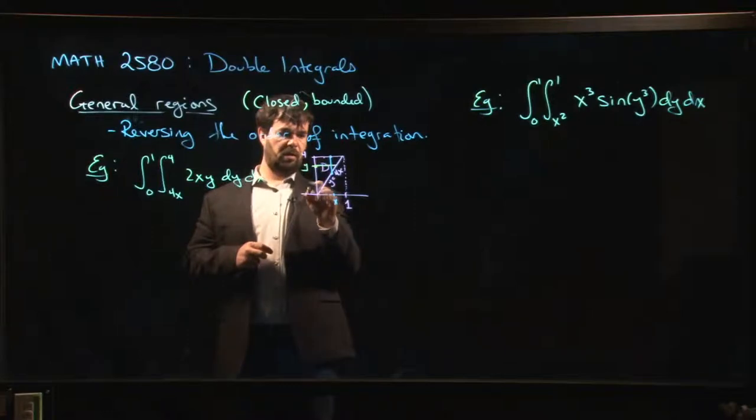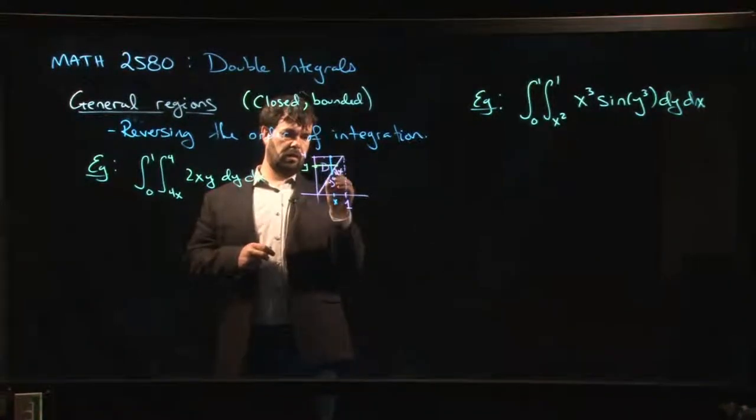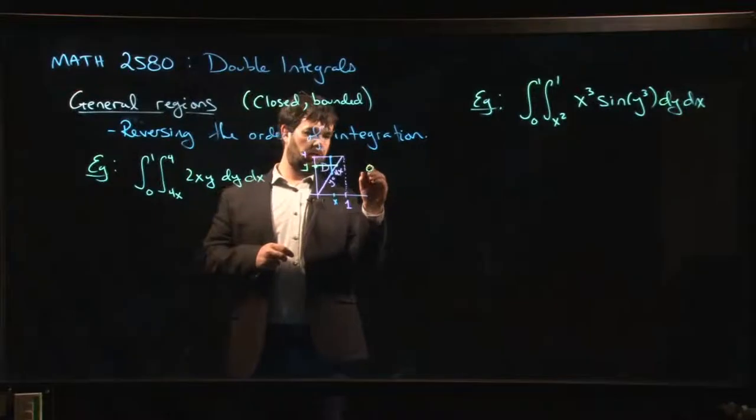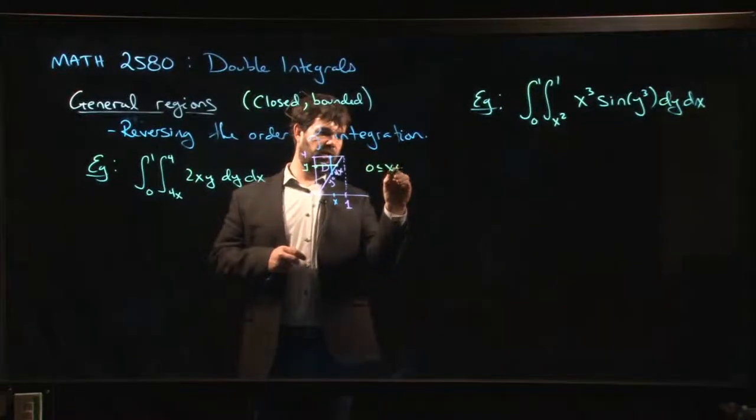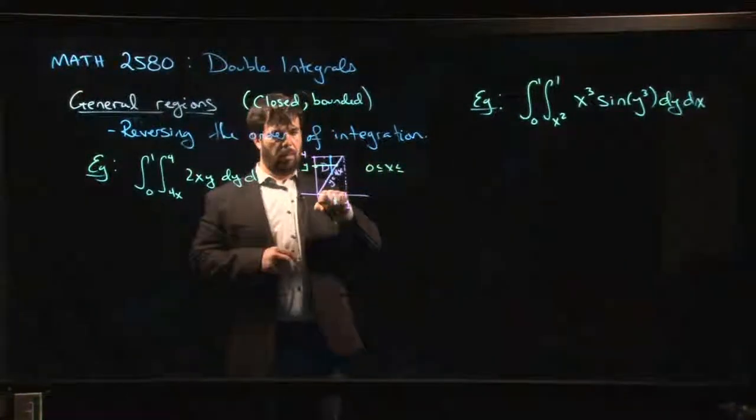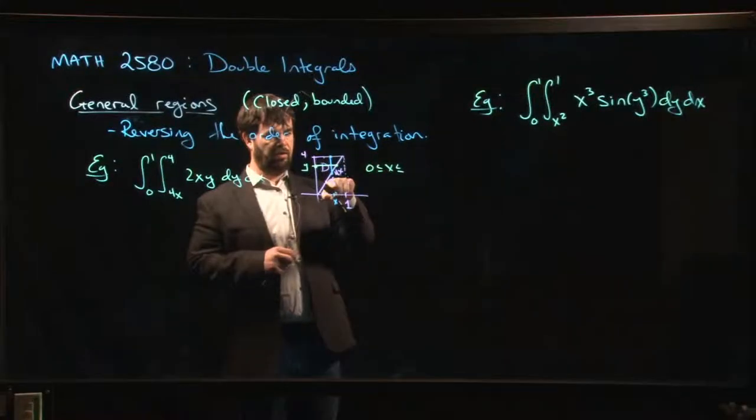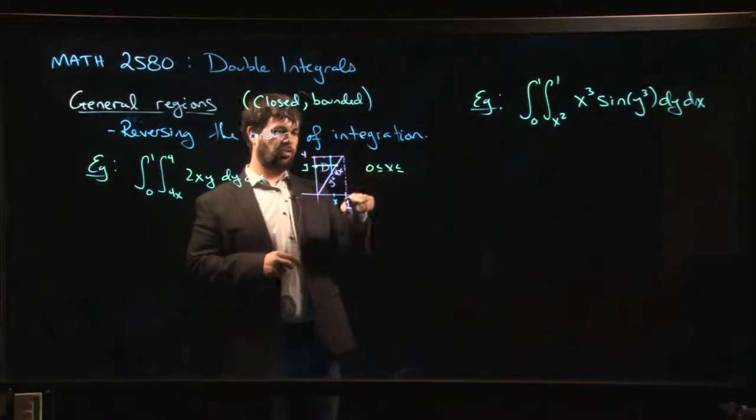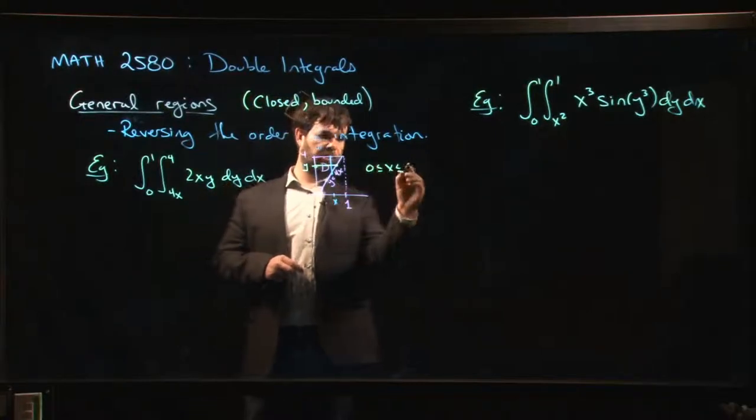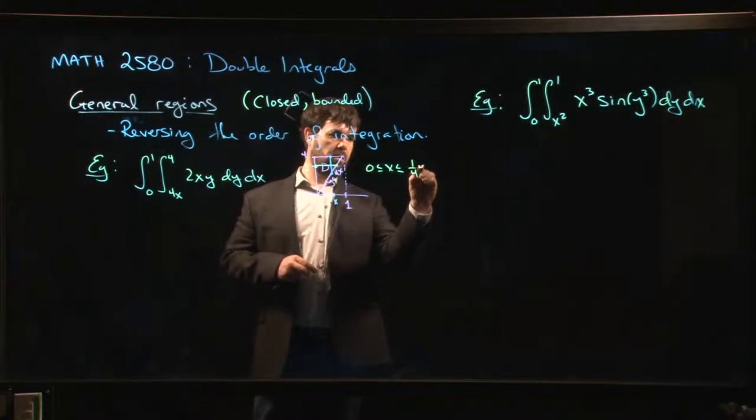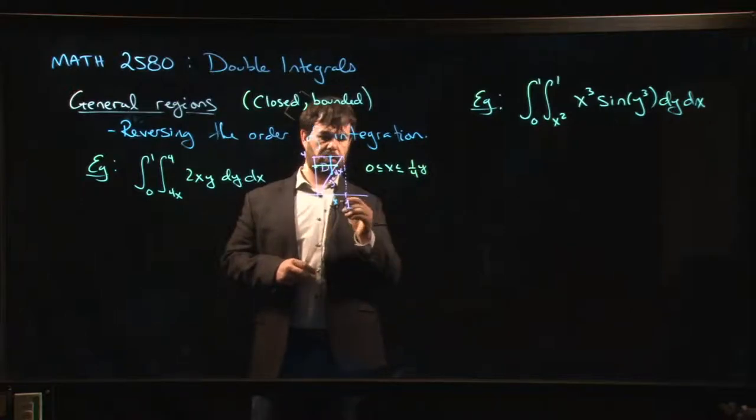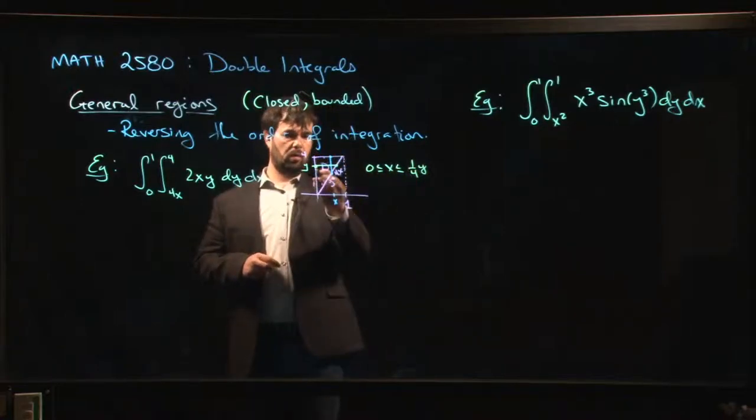Well, x starts here at zero and it ends on the line. So we have 0 ≤ x ≤ ... well, now I've written down the equation of the line. I've written y as a function of x, but I need x in terms of y. So x in terms of y, well I just divide both sides by 4, one quarter y. So x goes from zero to one quarter y. And we do that for each y value starting at zero and ending at four.